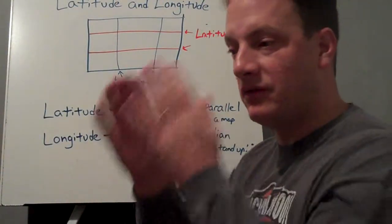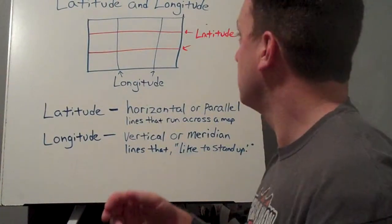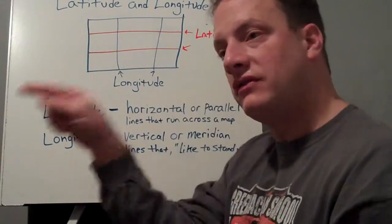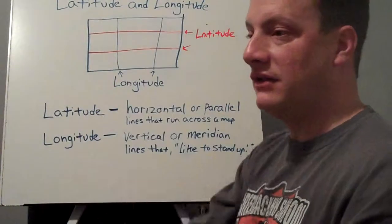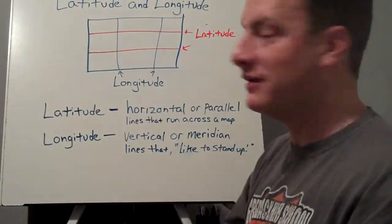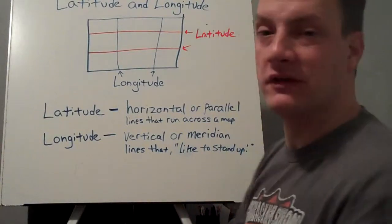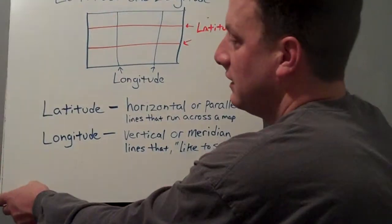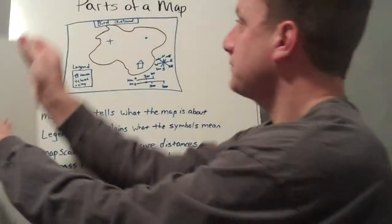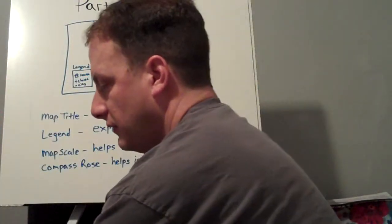If in math class you use grid paper, the latitude lines are those lines that go straight across your paper. Longitude lines are those lines that go up and down on your paper, and where they meet it makes a perfect square. Okay, there's latitude and longitude and we'll talk more about it in class.